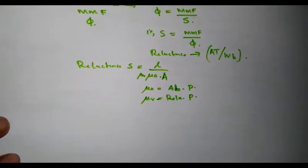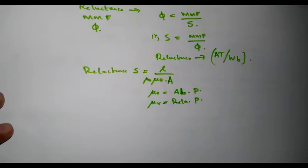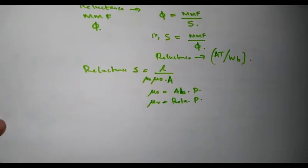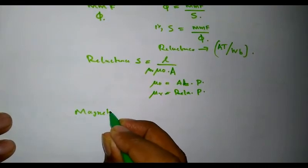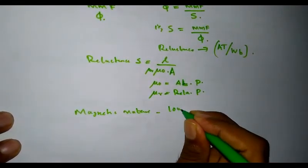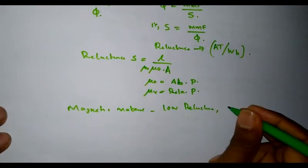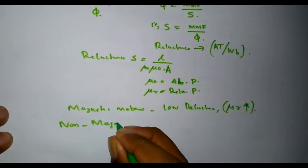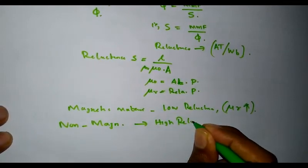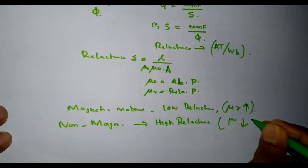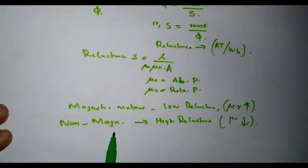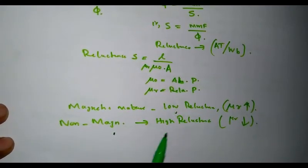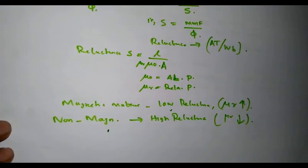Reluctance is an important parameter in a magnetic circuit. Greater the value of reluctance, more MMF is required to set up flux. Lesser the value of reluctance, lesser MMF is required to set up flux. Magnetic materials have low reluctance because they have a very high value of μᵣ. Non-magnetic materials have high reluctance because their μᵣ is very low. Therefore, materials are classified based on μᵣ as magnetic materials (low reluctance) and non-magnetic materials (high reluctance).